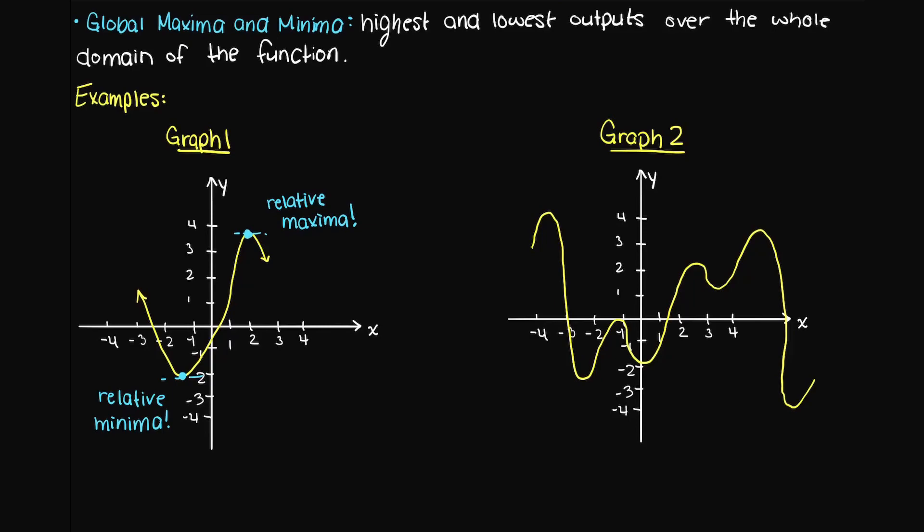Let's move on to our second graph. We can immediately notice that there are much more hills and valleys in this function compared to the previous function. However, the way we go about solving it is the exact same. Any points at which we have a hill, we have a local maxima, and any points at which we have a valley, we have a local minima.